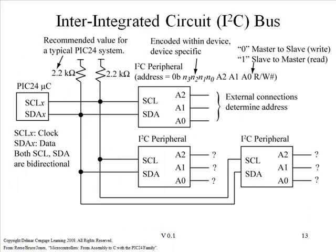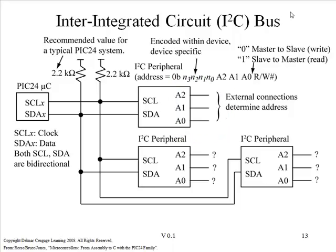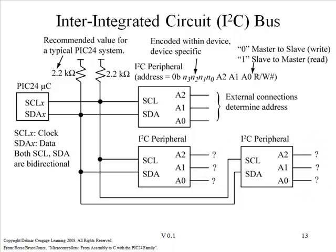In order for each chip to possess its own address, we need to be able to physically tell a specific chip what its address is. You can see that capability provided here on this chip — three external connections actually determine the address of that chip. For another chip, again three pins allow determination of a specific address.